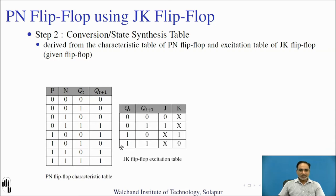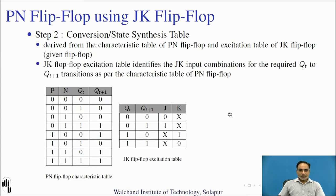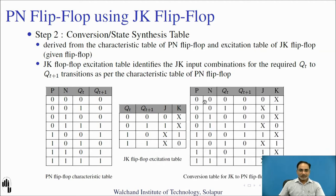Now let us use the excitation table of the JK flip-flop and the characteristic table of the PN flip-flop to derive the conversion table required for this design. The JK flip-flop excitation table identifies the JK input combinations for the required present-state to next-state transitions as per the PN characteristic table. The first four columns of the conversion table are the characteristic table of the PN flip-flop, while the last two columns are derived from the JK excitation table.